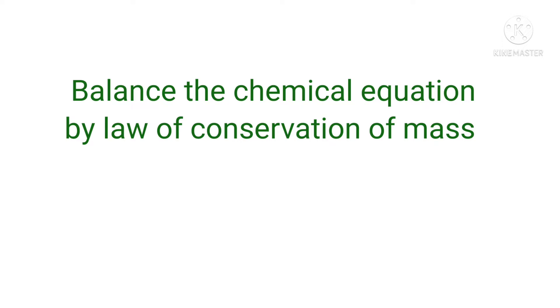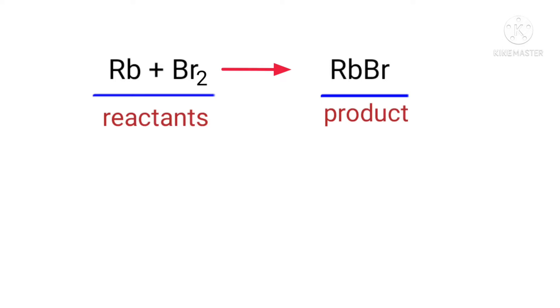Balance the chemical equation by law of conservation of mass. Rubidium plus Bromine gives us Rubidium Bromide. In this equation, the reactants are Rubidium and Bromine, and the product is Rubidium Bromide.